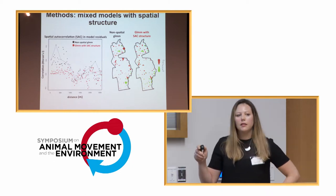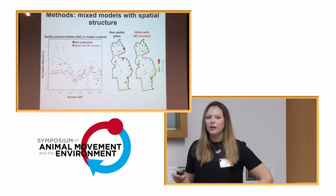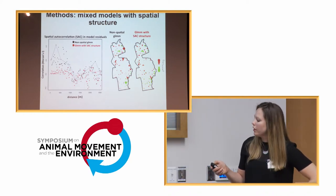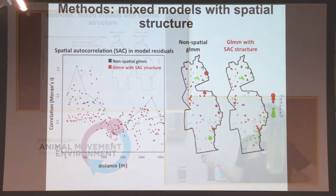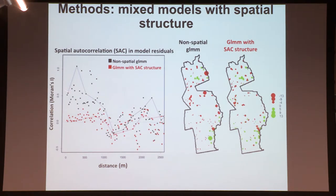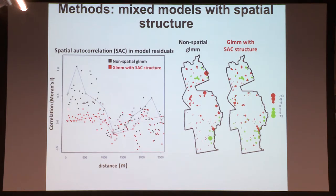We combined the environmental data and the observational presence-and-absence data in a generalized linear mixed model framework and found that the residuals were highly affected by spatial autocorrelation. We accounted for this by adding a spherical autocorrelation structure to the random effect in the generalized linear mixed model, which decreased the spatial autocorrelation in model residuals to an acceptable level. We then used information criterion and variable significance tests to select a final best model at each grain.